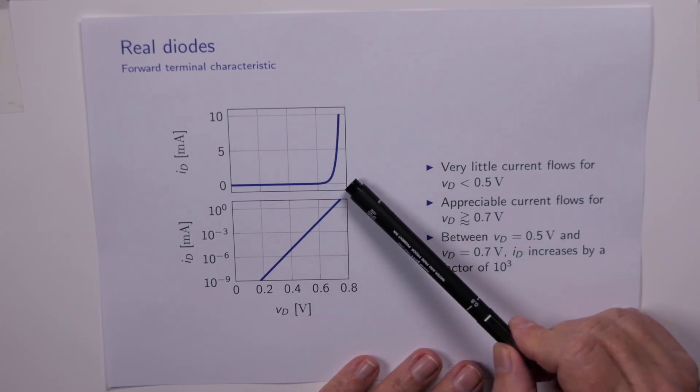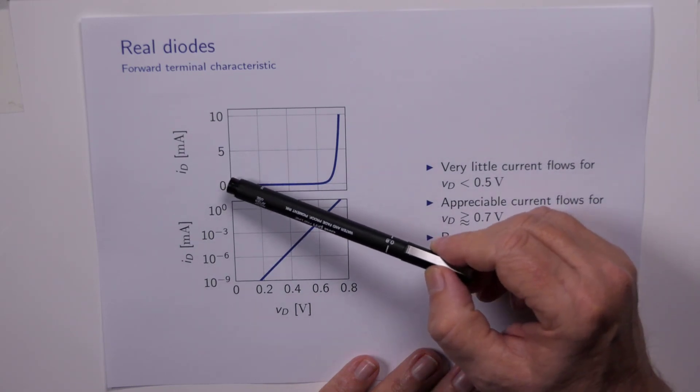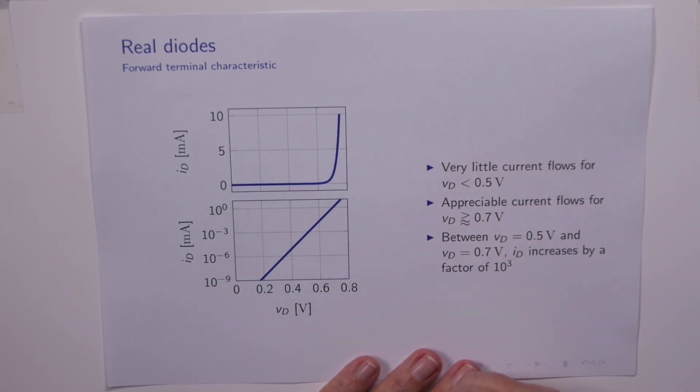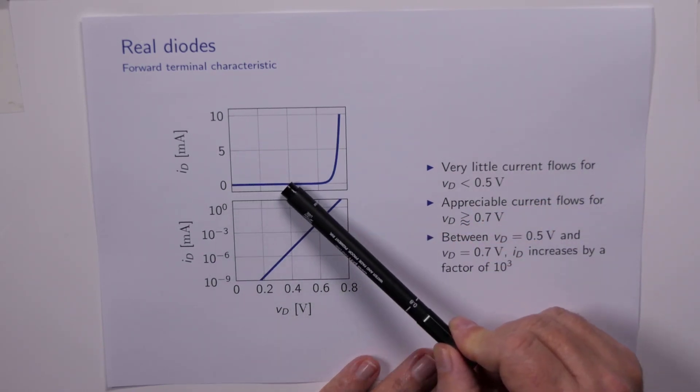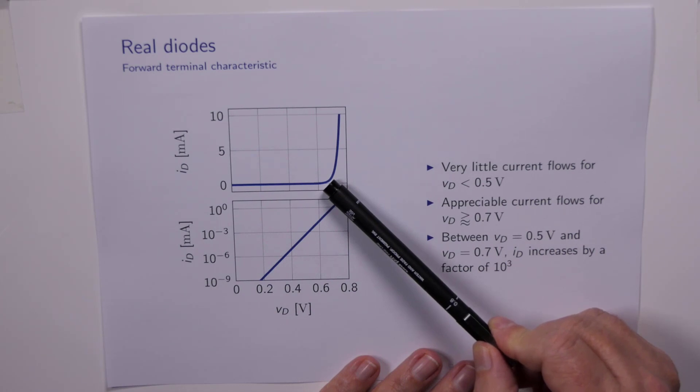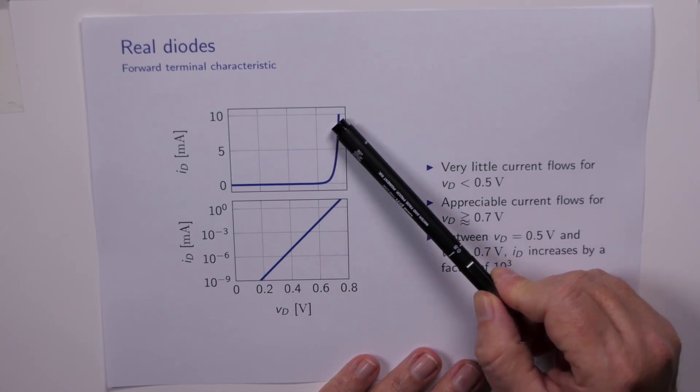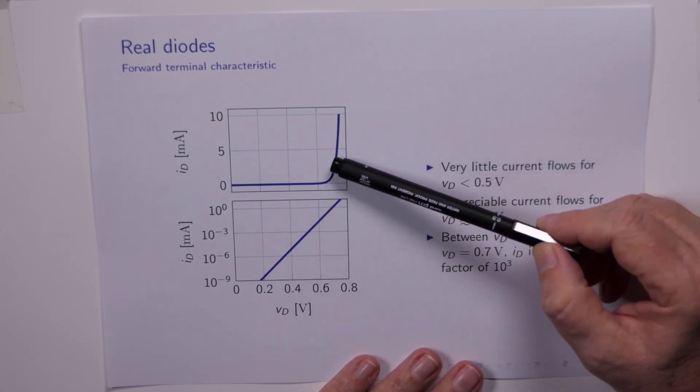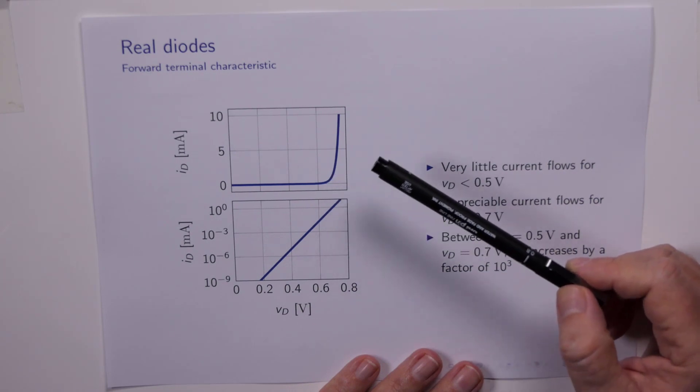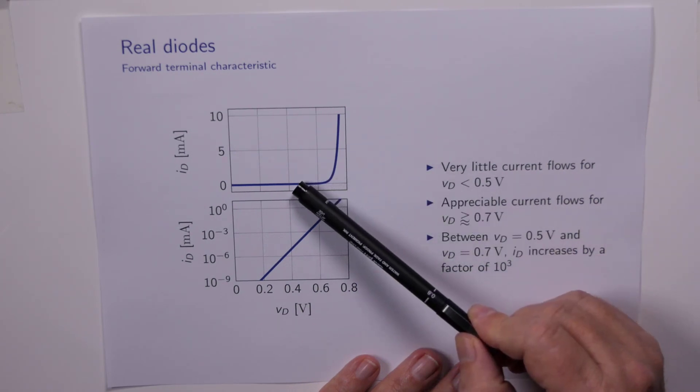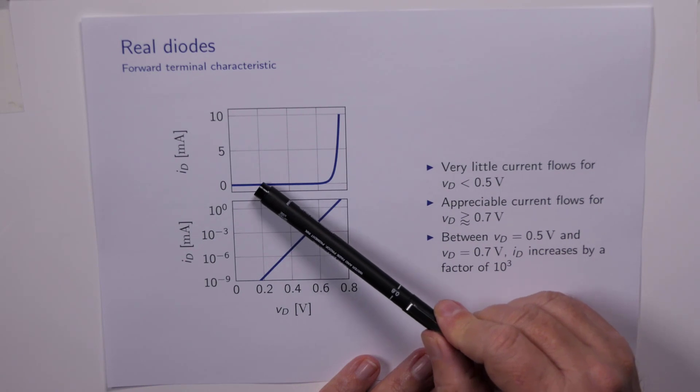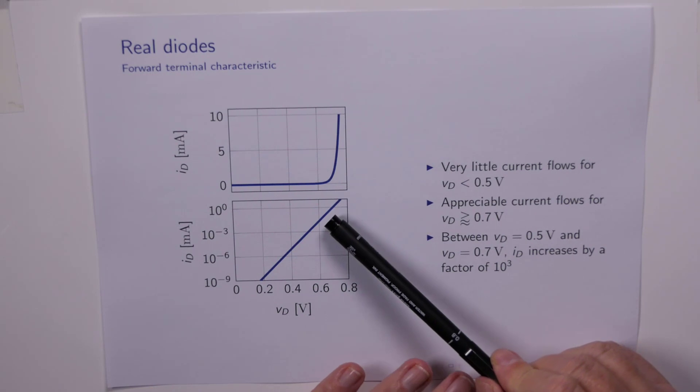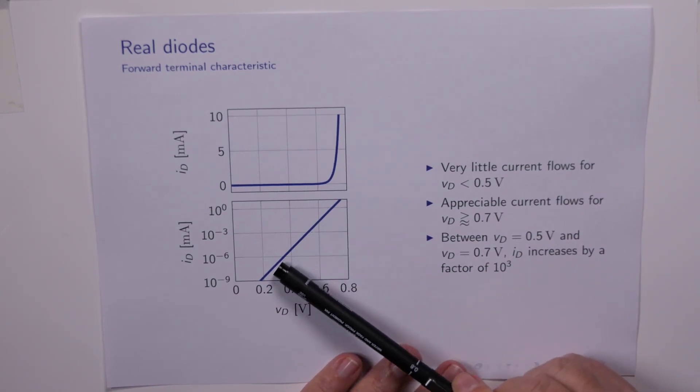So we can see from the top graph that instead of the characteristic hugging the current axis when VD is positive, it actually takes an appreciable forward voltage VD before the diode starts to conduct. In fact, the diode doesn't really conduct appreciably until around about 0.7 of a volt. Down here it looks like it's essentially zero, but we can expose this very low level behavior by plotting the current on this logarithmic scale.